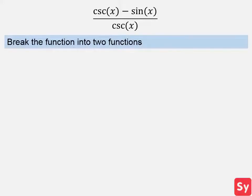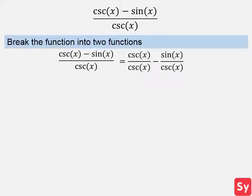Second example, we have csc(x) minus sin(x) over csc(x). First, we will break the function into two functions. So this equals csc(x) over csc(x) minus sin(x) over csc(x).